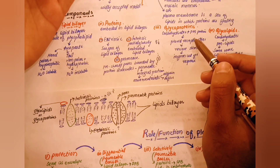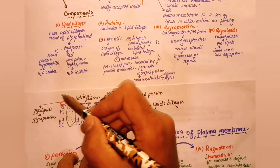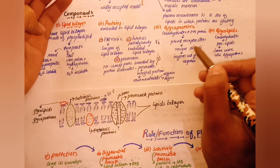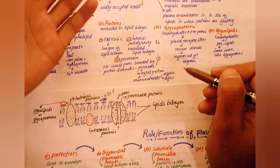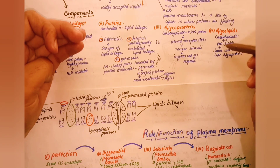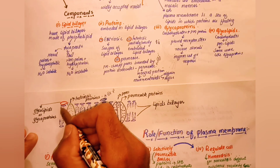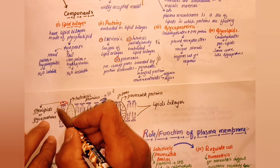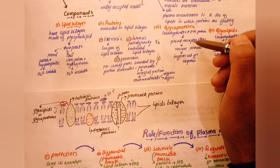Glycoprotein functions as a receptor — it receives stimuli or signals such as hormones. Glycolipids are formed by carbohydrates combined with membrane lipids. Glycolipids perform the same functions as glycoproteins, acting as receptor sites and participating in cell recognition.